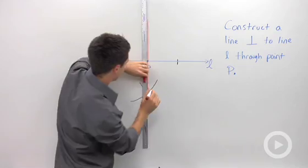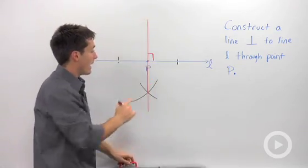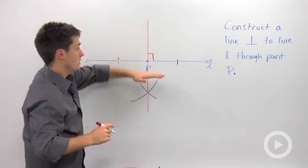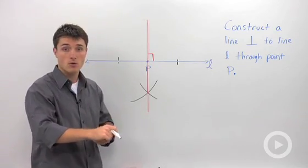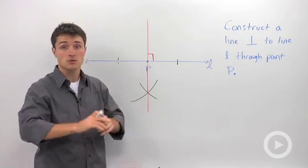We have our perpendicular that passes through point P, perpendicular to line ℓ. This is a great technique when you're trying to construct a square or a rectangle in a construction problem.